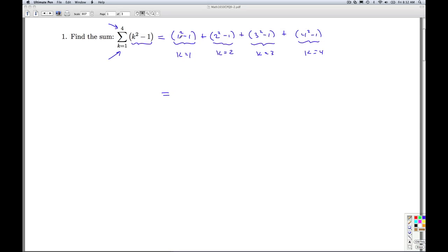So I simplify. 1 squared minus 1 is 0. 2 squared minus 1 is 3. 3 squared minus 1 is 8. 4 squared minus 1 is 15. So we got 3, 11, 26. So that'll do it for number 1.